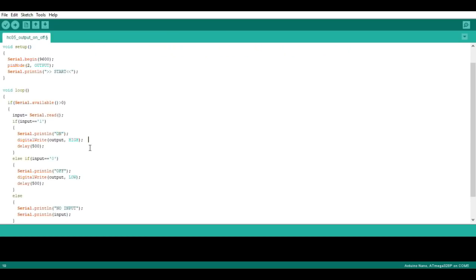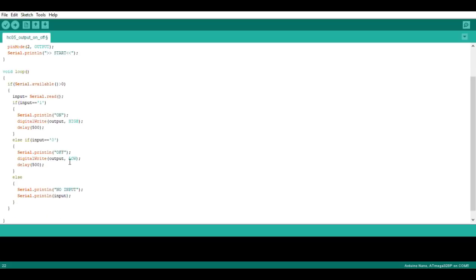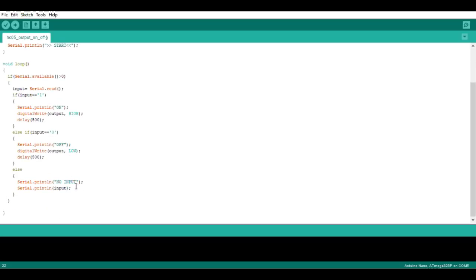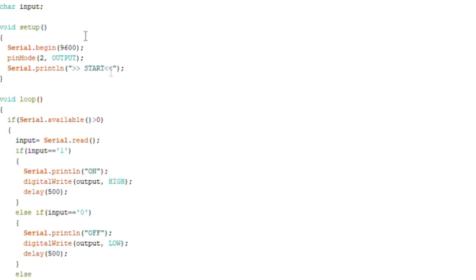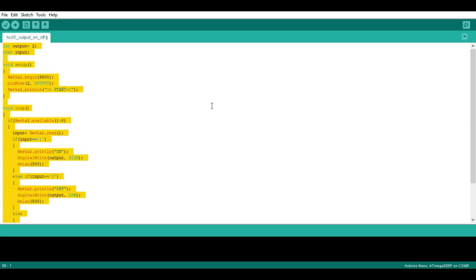Now, in void loop first I use serial available which is a serial transmitting and receiving function. Then I have used an if else statement and in those I have put this case that if our microcontroller receives one, then our output which is the relay will turn on and then serial print will show on message, or if the microcontroller receives zero, then our relay will turn off and an off message will appear.